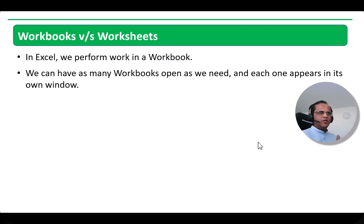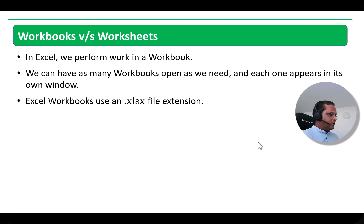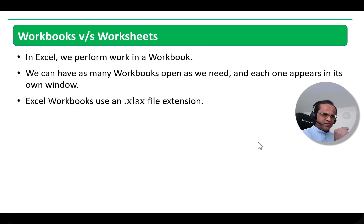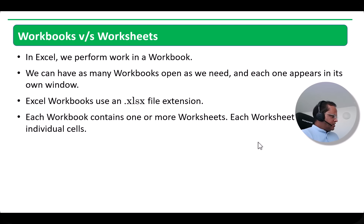If we open three or four workbooks, they will open in different windows and we can simultaneously work with those different workbooks. The Excel workbook has the extension .xlsx — earlier it was known as .xls, but now it uses the extension .xlsx. That is the file extension for the current Microsoft Excel file. Each workbook contains one or more worksheets, and those worksheets are part of a particular workbook.